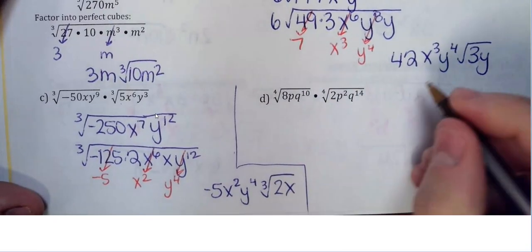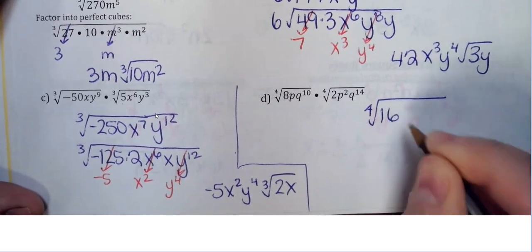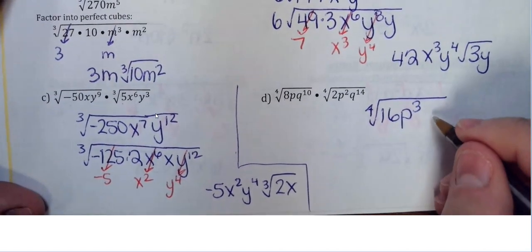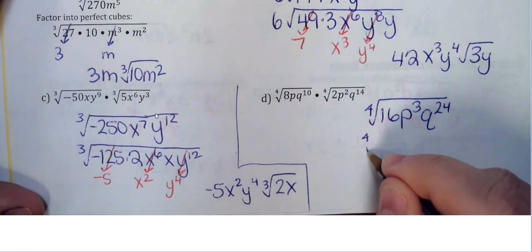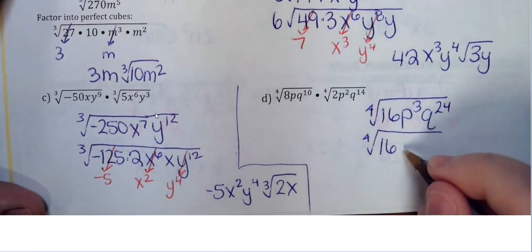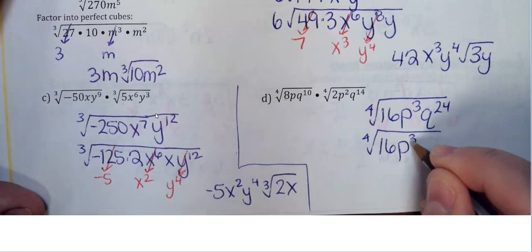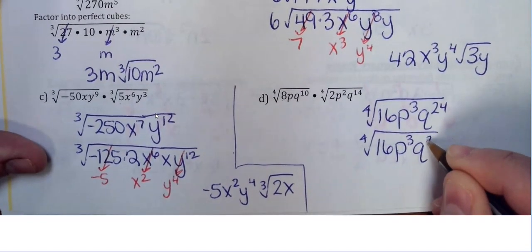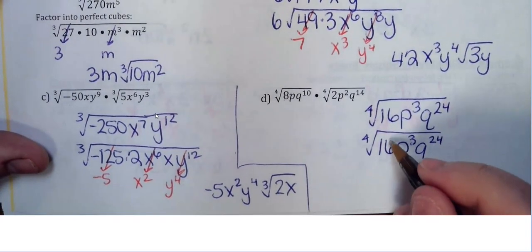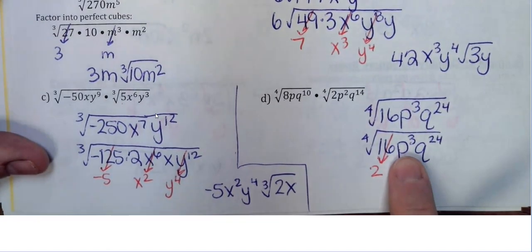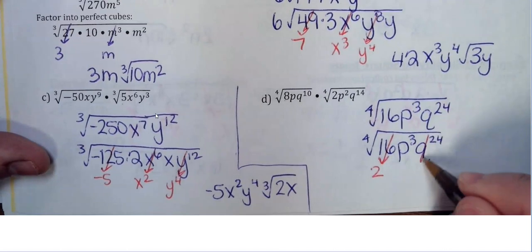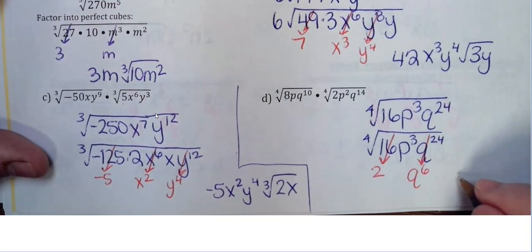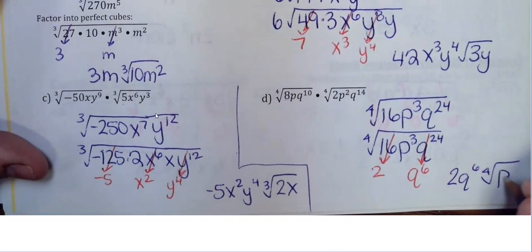Practice: fourth root. ∜(8p·q¹⁰)·∜(2p²q¹⁴): multiply 8×2 = 16; p¹·p² = p³; q¹⁰·q¹⁴ = q²⁴. Now simplify ∜(16p³q²⁴): 16 is a perfect fourth — leaves that alone; p³ has exponent smaller than the root so it stays underneath; q²⁴ divided by 4 gives q⁶. Fourth root of 16 comes out as 2, q⁶ comes out. The answer is 2q⁶·∜(p³).